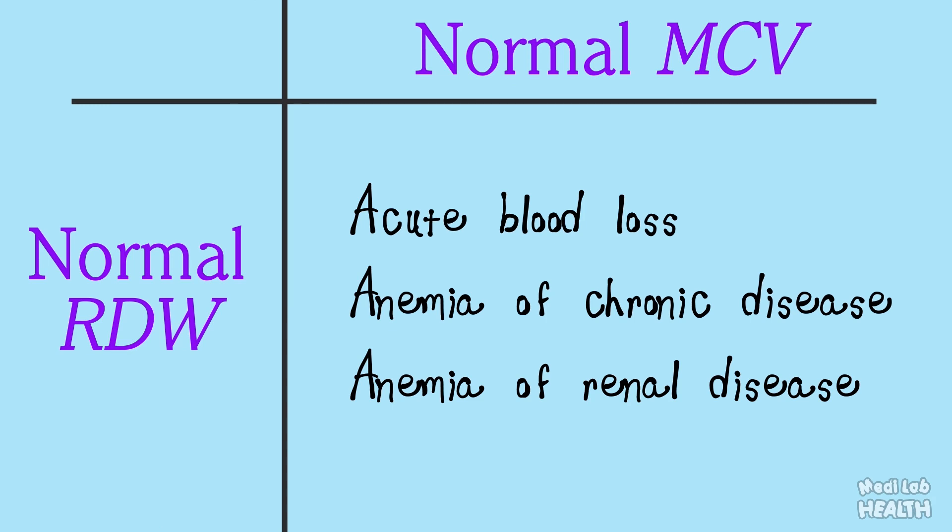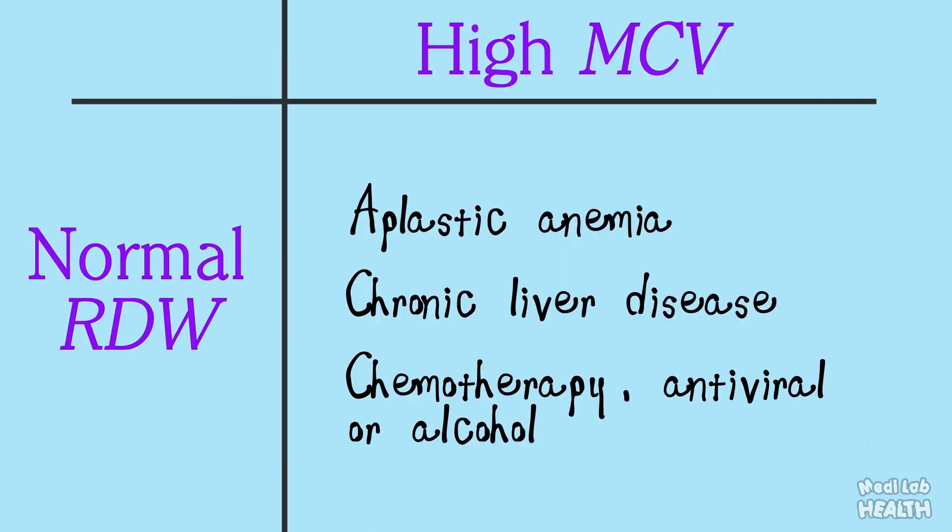Here we share some more reproducible changes of MCV and RDW associated with certain types of anemias. Try to keep them in mind. That will help you to diagnose different types of anemias by looking at the complete blood count.